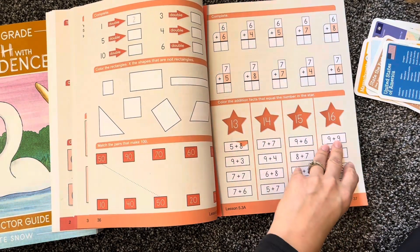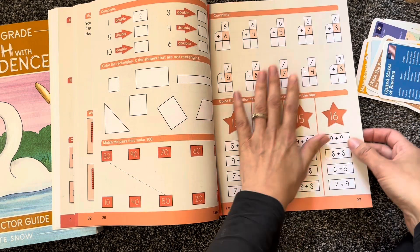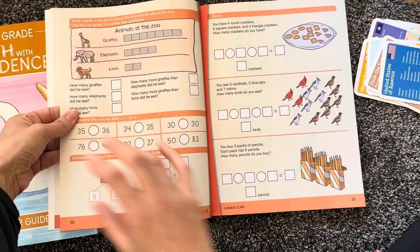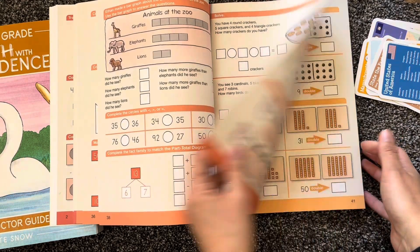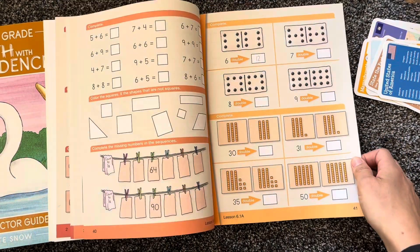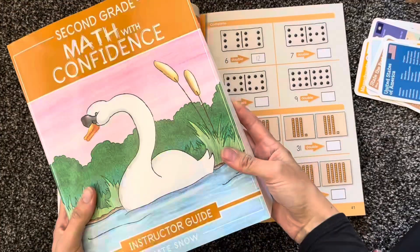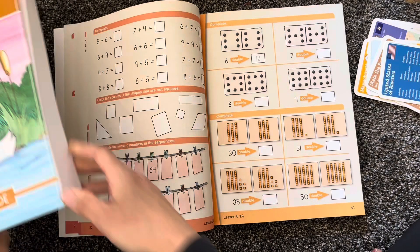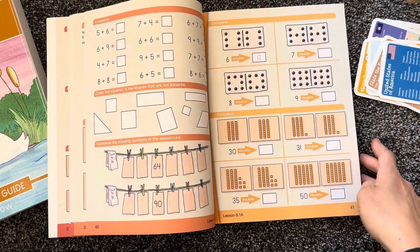So there'll be an A page which is new material and a B page which is review. And that just follows through the whole entire book. The next day would be your fourth day of the week and you would have 5.4 and then review. There's a fifth day in the instructor's guide with suggestions for review, but the actual student workbook is chunked into four-day week.